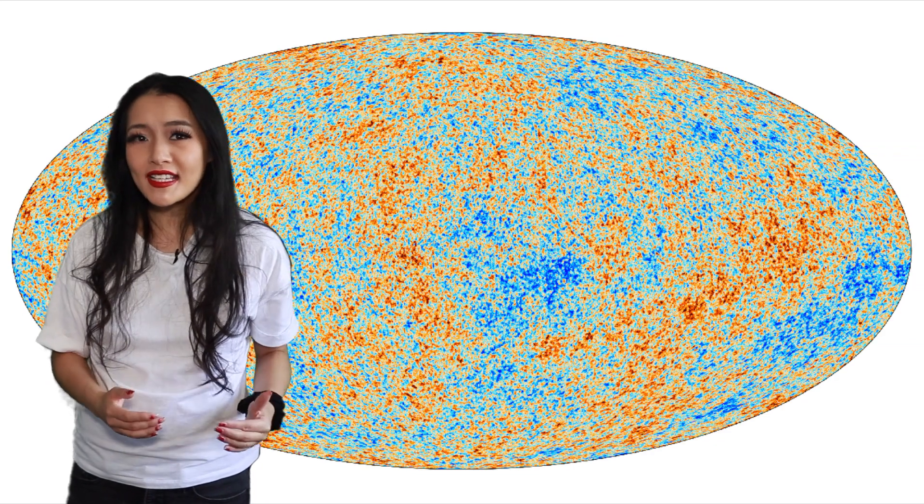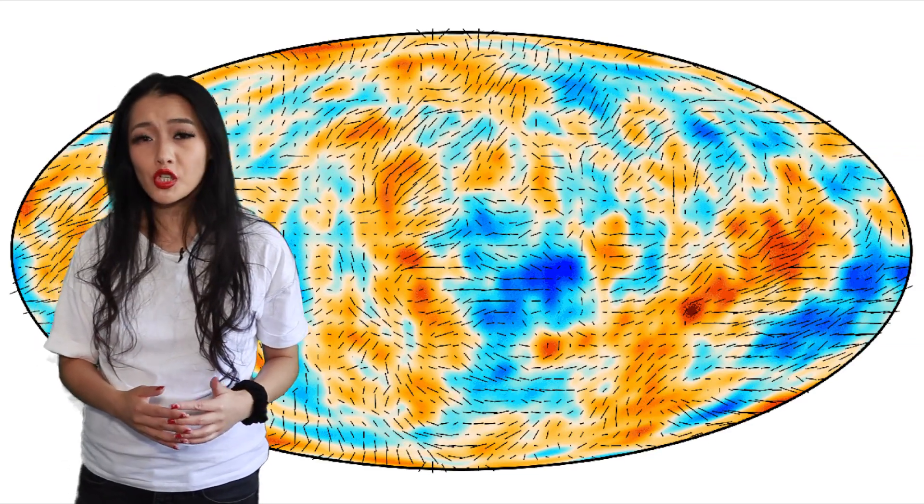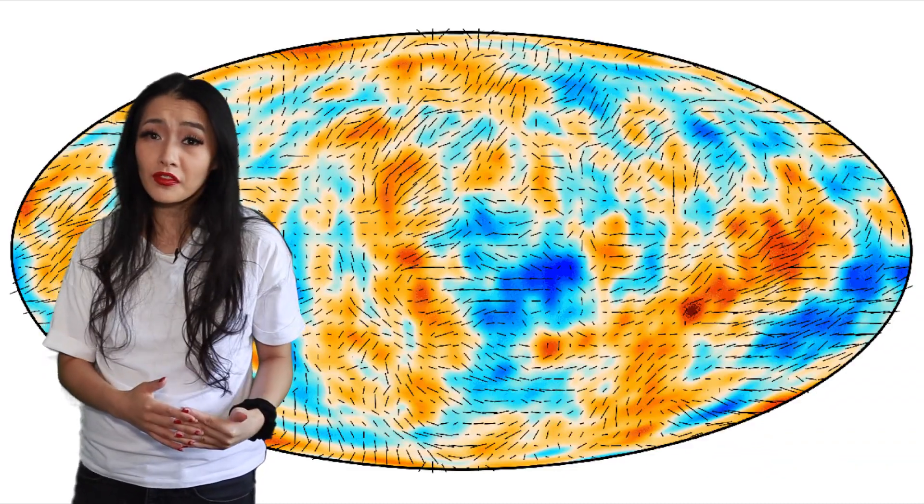It shouldn't exist in our currently favoured cosmological models and strangely it seems to coincide with the Eridanus Supervoid. In order to create such a cold spot in the cosmic microwave background, the Supervoid would have to be a billion light years in size, which is even more improbable than the existence of the cold spot itself.